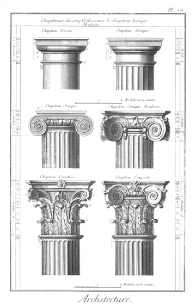Volute: a spiral, scroll-like ornament that forms the basis of the Ionic Order.